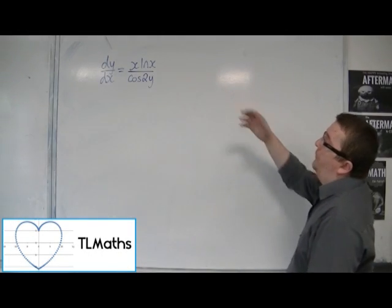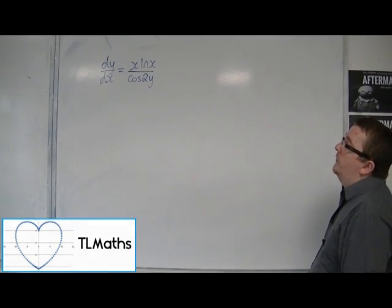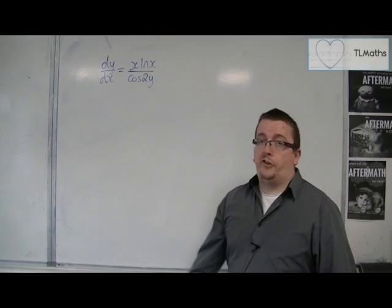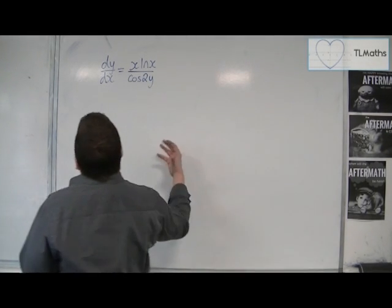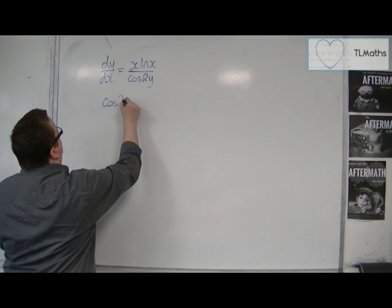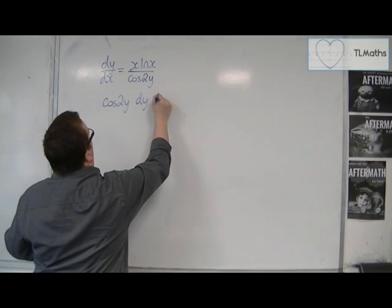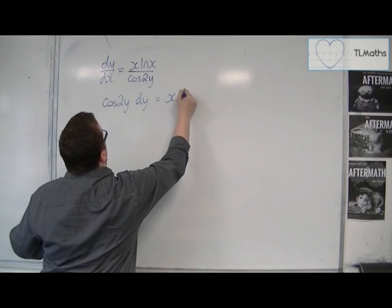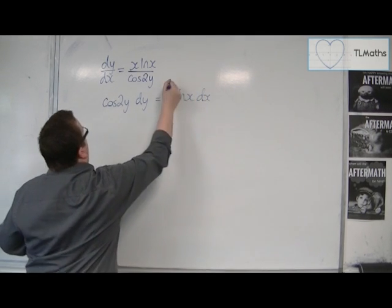Let's say I've been asked to find the general solution of dy by dx equals x log x over cos 2y. I would multiply both sides by the cos 2y and then multiply both sides by the dx and then try and integrate.